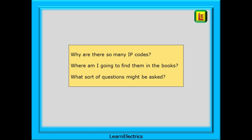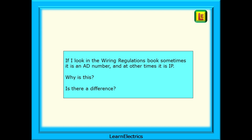Frequently asked questions have included things like: Why are there so many IP codes? Where am I going to find them in the books? What sort of questions might be asked? And a recent social media post asked: if I look in the wiring regulations book, sometimes it's an AD number, and at other times it is IP. Why is this? Is there a difference?